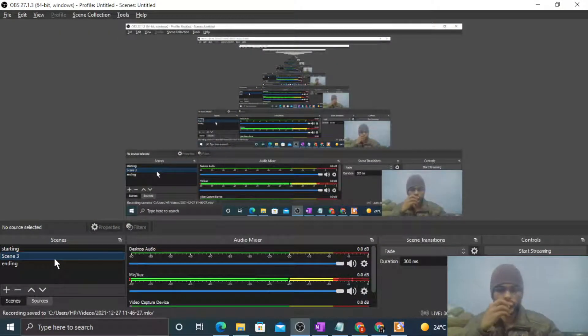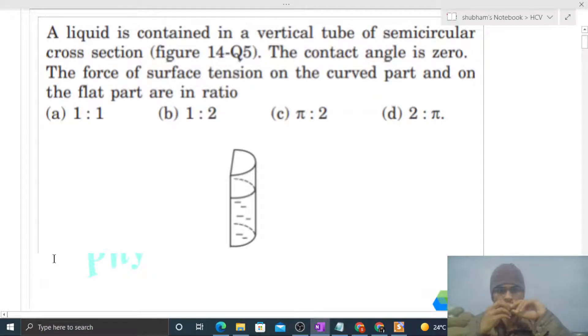Okay, hi everyone. Today let's discuss one interesting problem. It says a liquid is contained in a vertical tube of semicircular cross-section. The contact angle is zero. The force of surface tension on the curved part and on the flat part are in ratio.